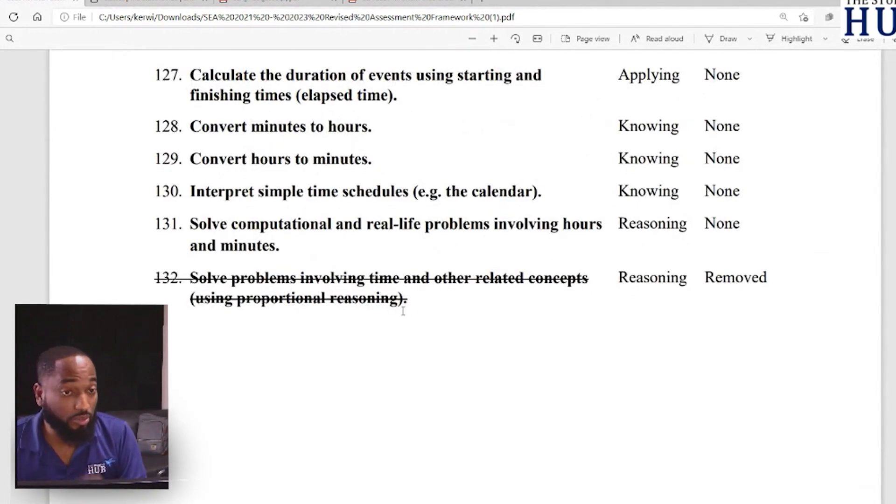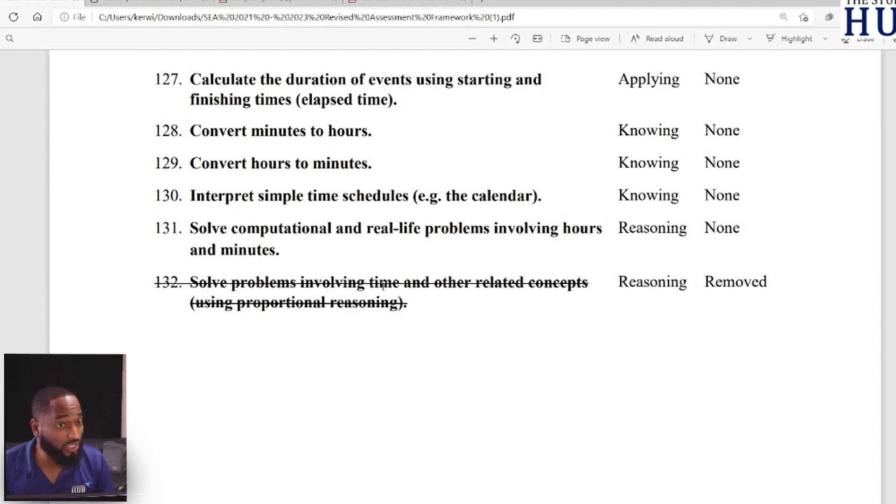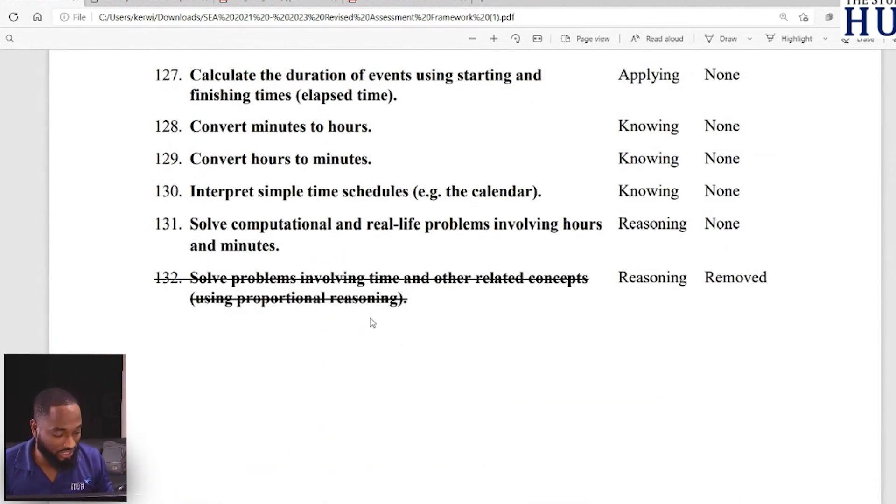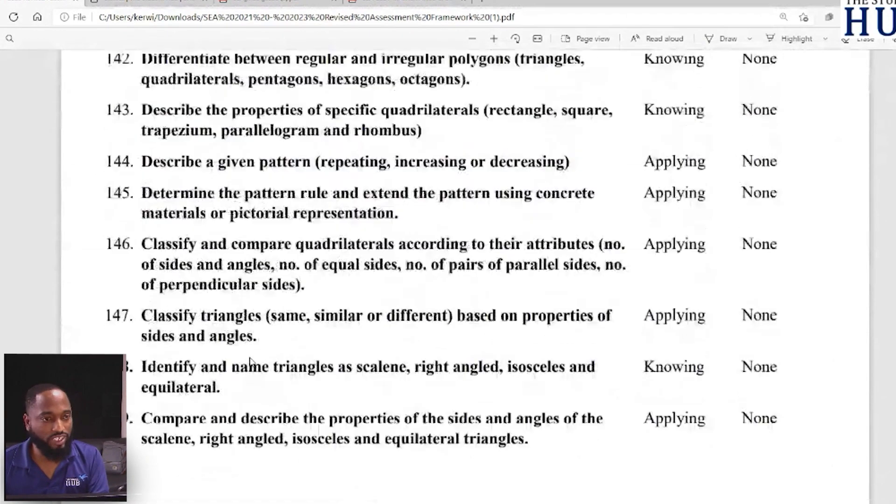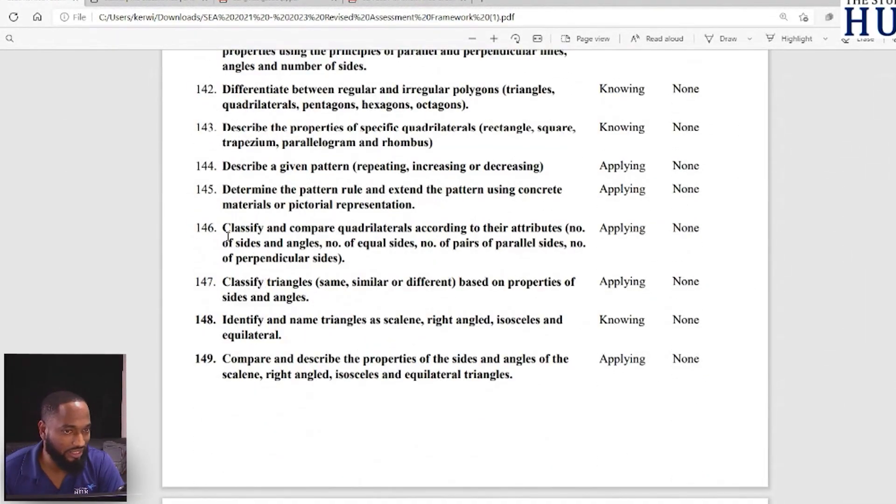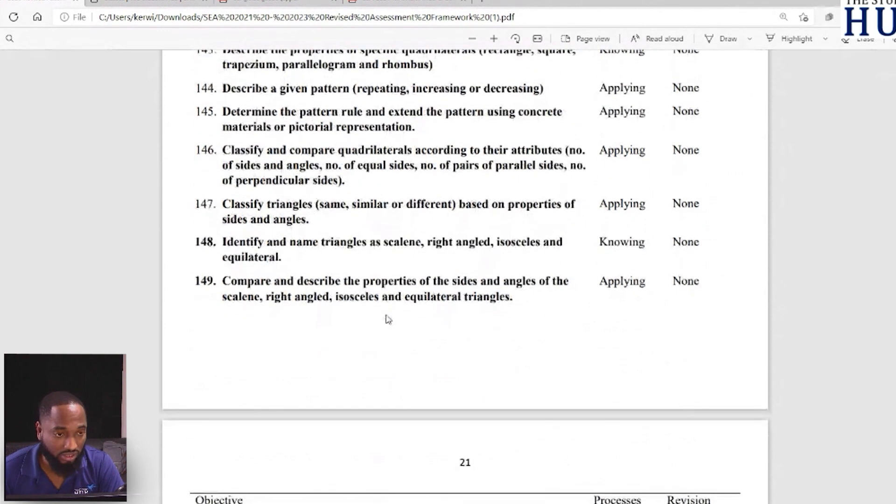Calculate the unknown mass or weight on a balance including the use of algebraic reasoning - so they give you something with a missing mass that you need to calculate using some kind of algebraic reasoning. You're not going to use Form 3 algebra, but you're going to use algebraic reasoning to find the missing weight that's apparently balancing two sides of an equation. That's out. The 24-hour digital clock is out. Solve problems involving time and other related concepts using proportional reasoning - so where you have to use proportional reasoning with time, that's out.